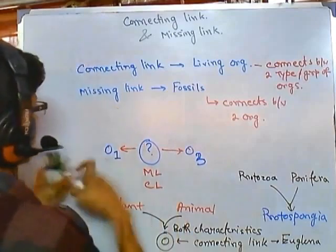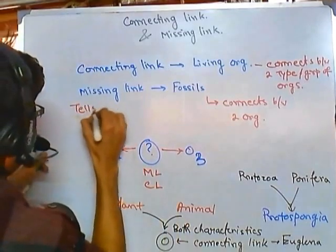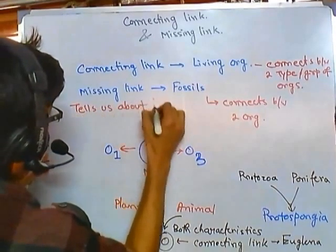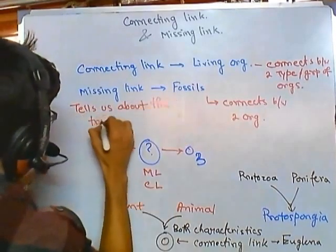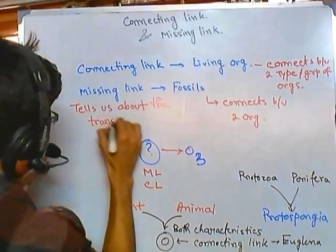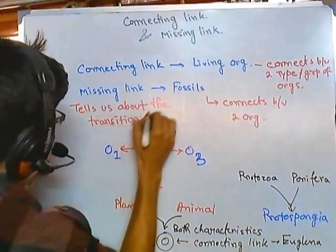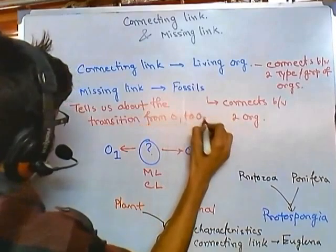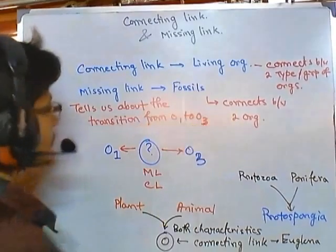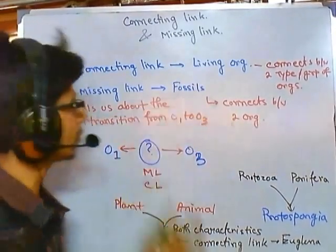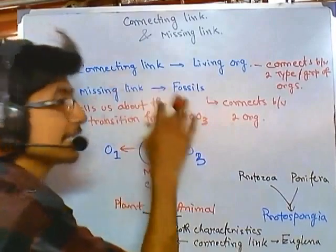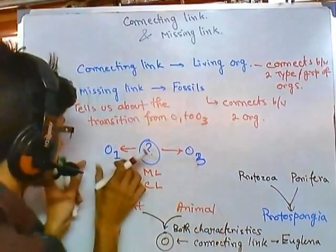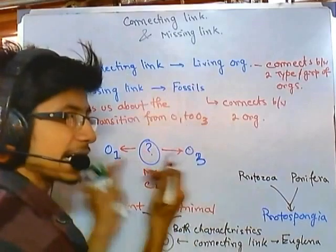The missing link tells us about the transition from organism O1 to O3. The transition is indicated by this intermediate fossil. That's why it is called the missing link — because when you find it, the link between O1 and O3 is now being connected.